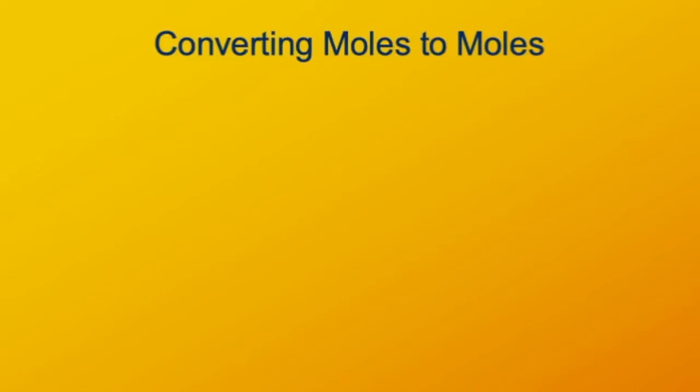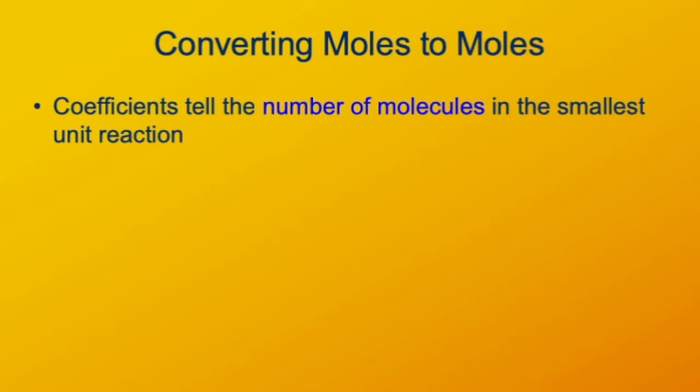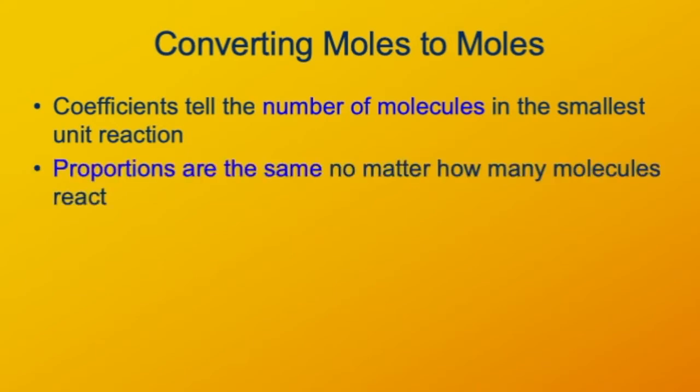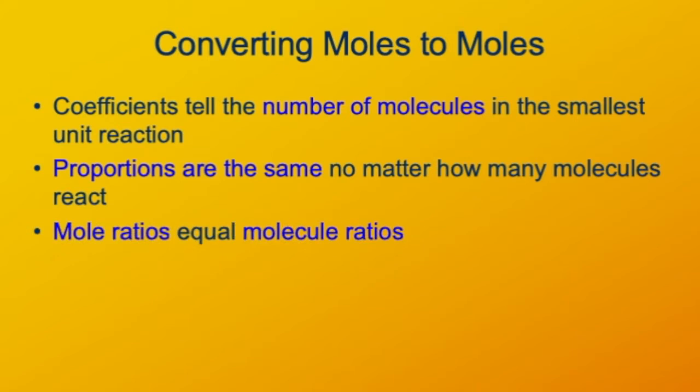When you're converting moles to moles, this is using a specific reaction equation. The coefficients in the reaction equation tell you the number of molecules in the smallest unit reaction. The proportions between the different components are going to be the same, no matter how many molecules are reacting. The mole ratios of the reactants and the products are the same as the molecule ratios.